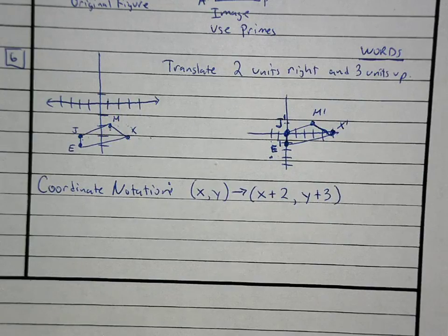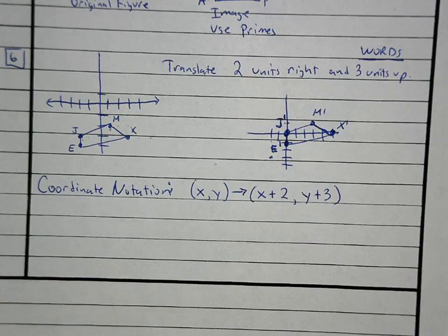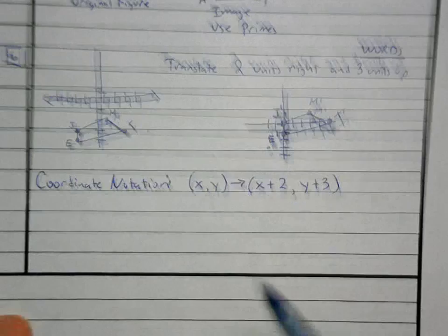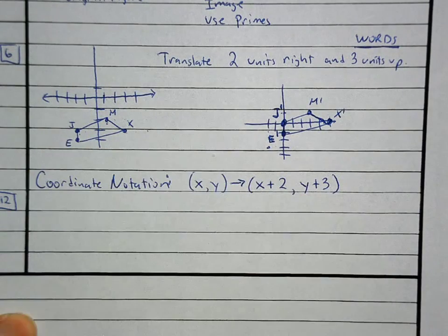The last example we have is where you're going to have to describe a translation in coordinate notation. Here's the last example — number 12 is the easiest one to draw for us.